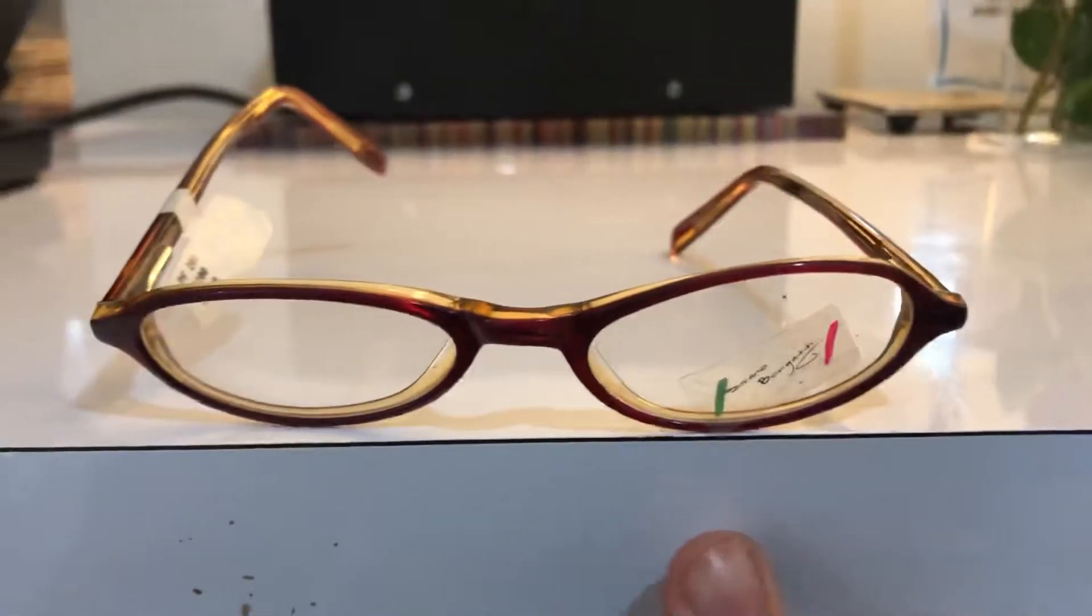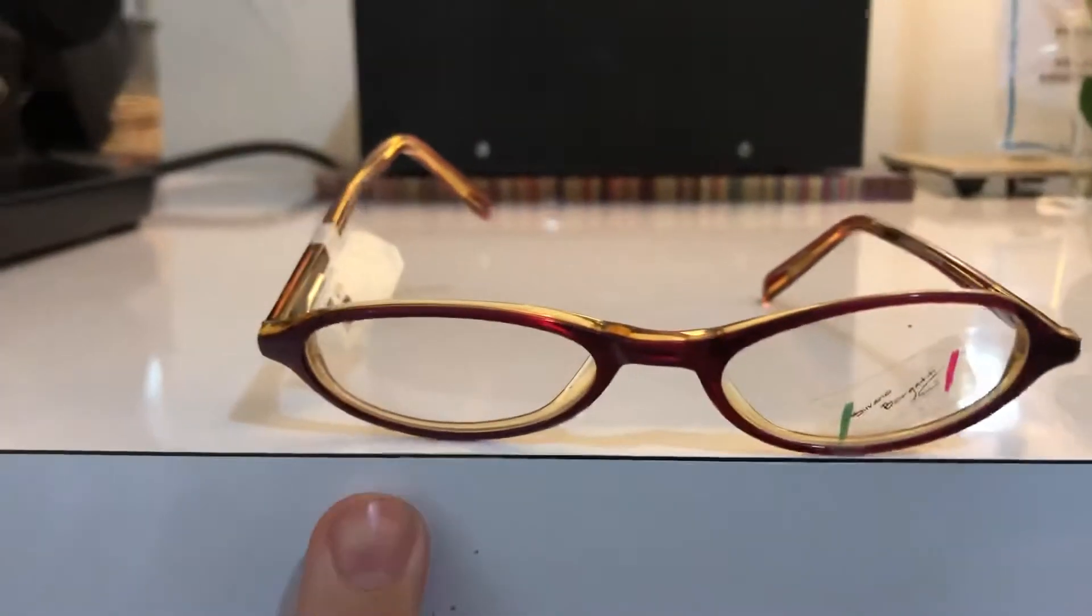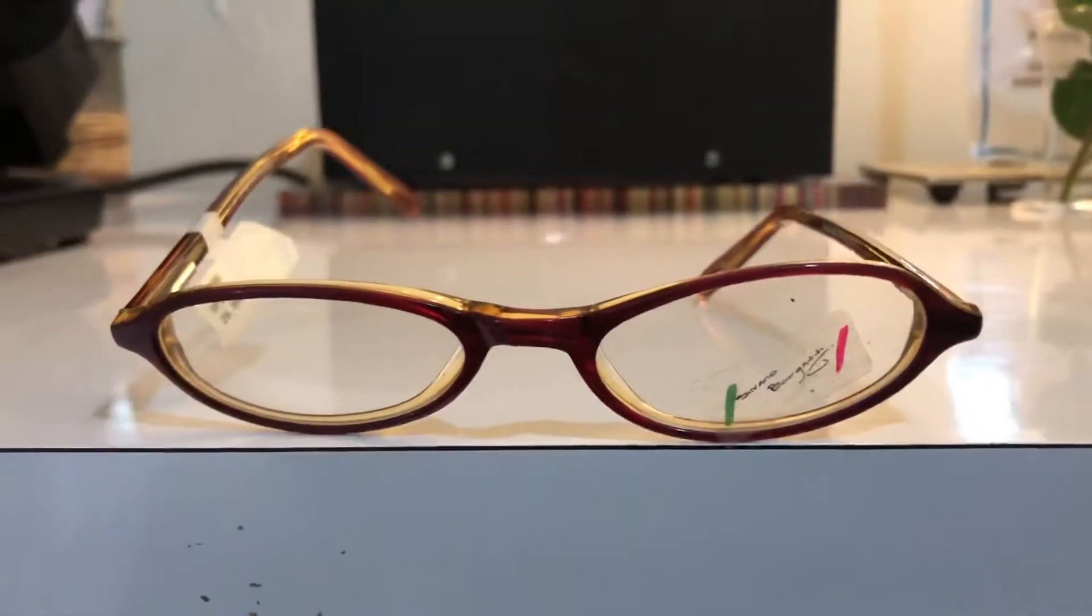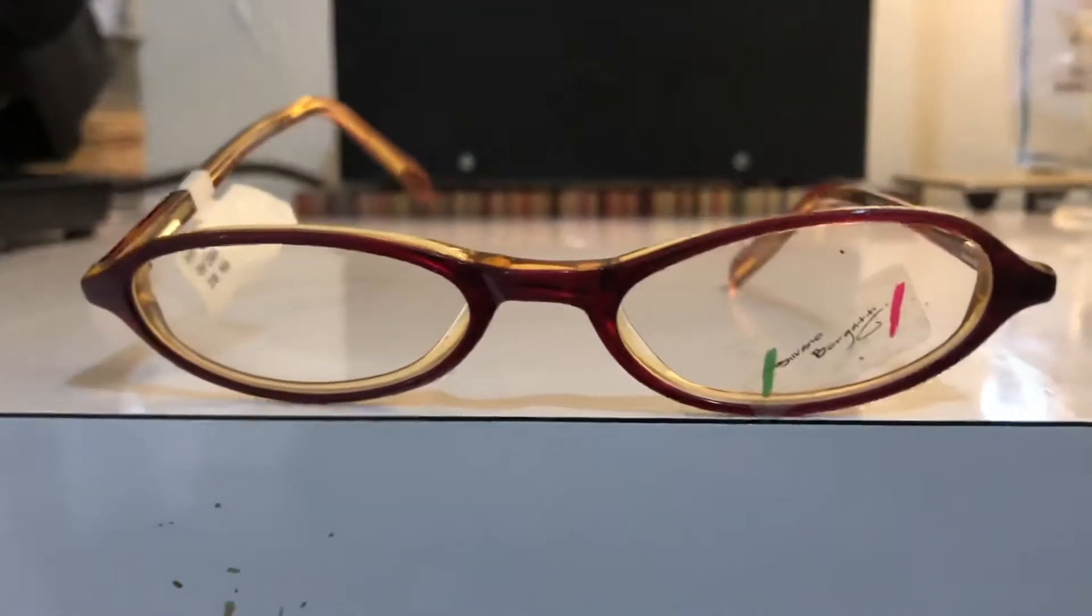This lens on the right is more forward than the one on the left. So this is called X-ing. In order to adjust this, you have to heat the bridge and we're going to push this lens back and this lens forward.